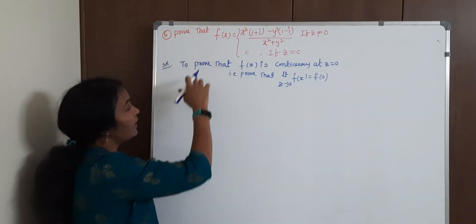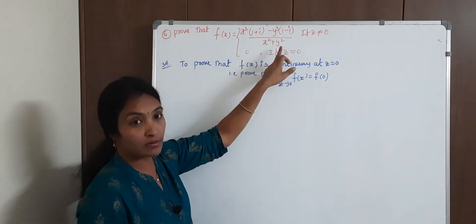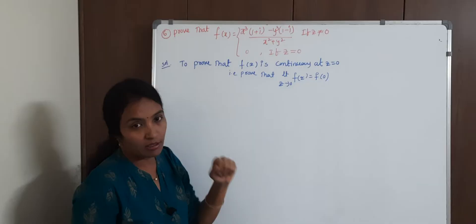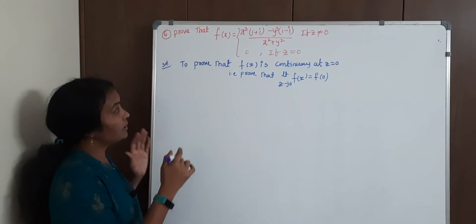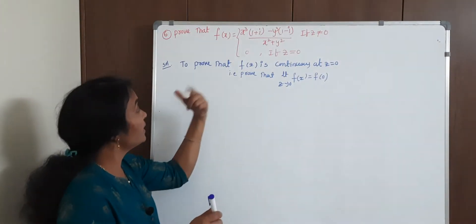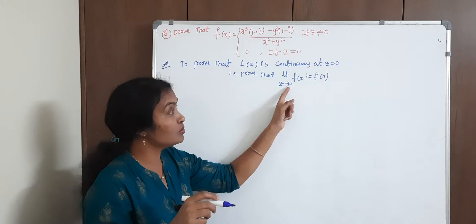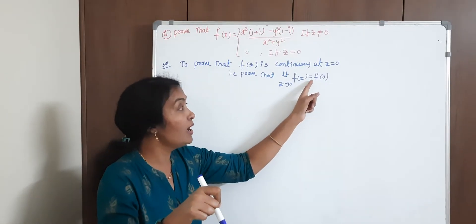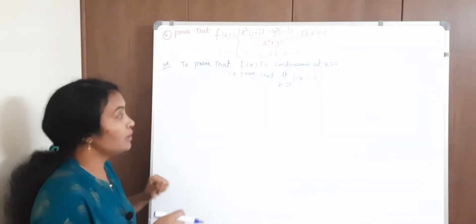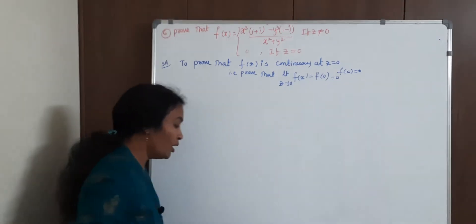What we have to prove: f of z equals x-cube times (1 + y) minus y-cube times (1 minus y), upon x-square plus y-square, when z is not equal to 0; and f of z equals 0 when z equals 0. We need to prove that f of z is continuous at z equal to 0. By our definition, we need to prove that limit z tends to 0 of f of z exists and is equal to f of z naught, which is f(0) = 0.